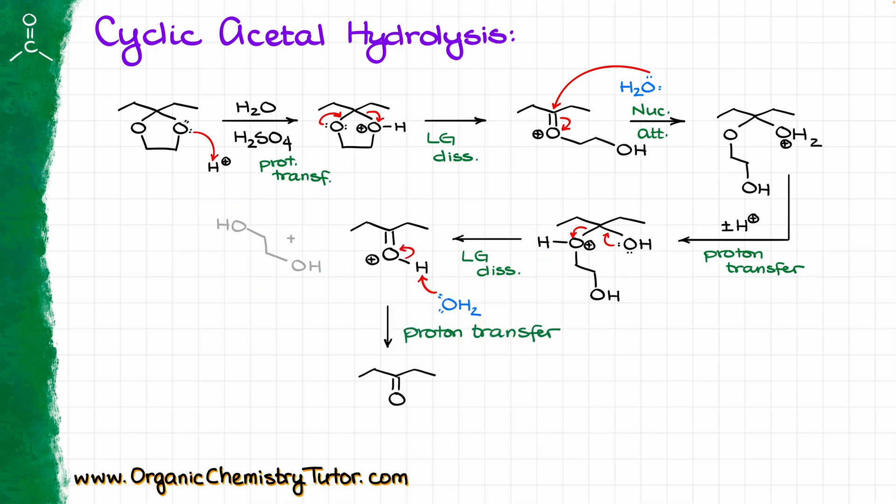And finally, we are going to have the last proton transfer to get rid of that extra proton sitting on our carbonyl and giving us the final product, which in this case is going to be a ketone. So, as I said, exactly the same pattern, exactly the same steps, with the only difference is that you're not going to be leaving your entire leaving group off the molecule immediately. It's going to stepwise fall off first one side, then the other side, and then eventually, instead of two equivalents of an alcohol, we are going to end up with one equivalent of the corresponding diol.